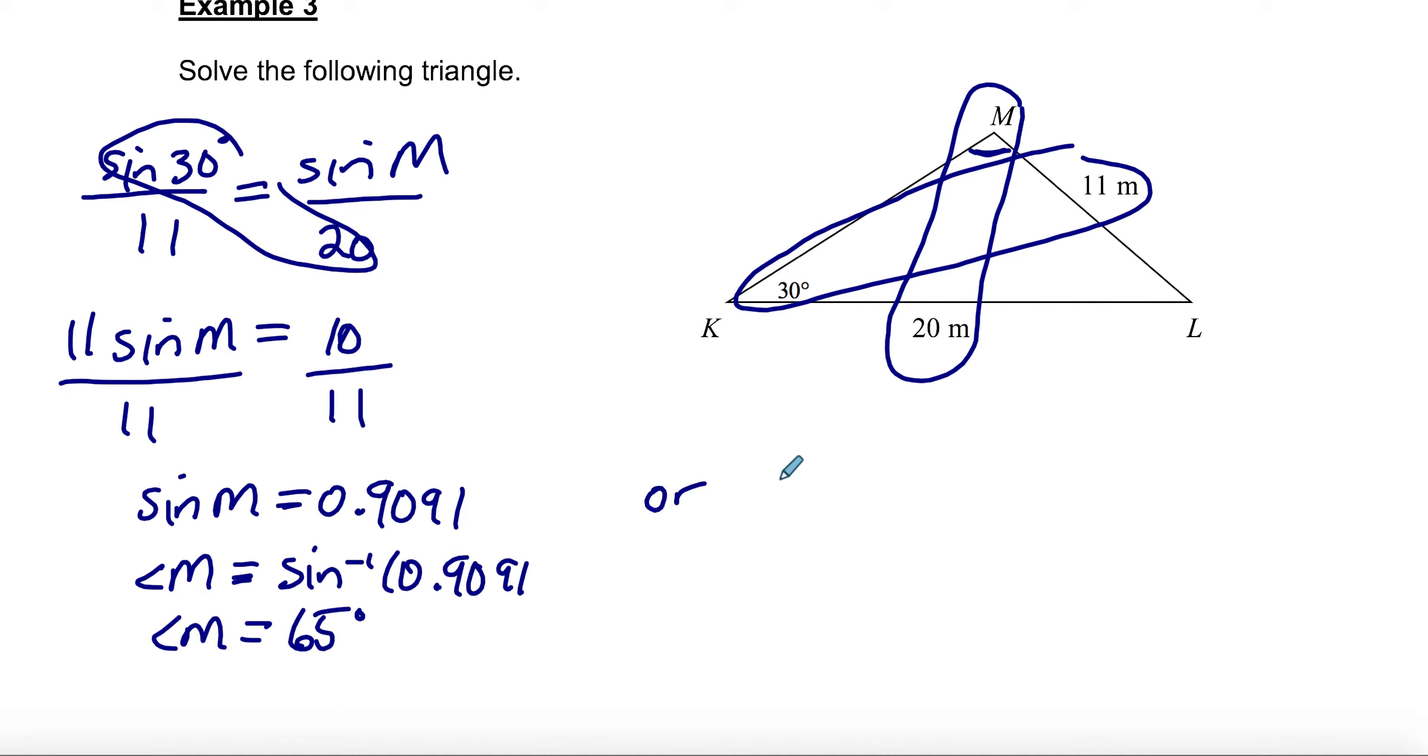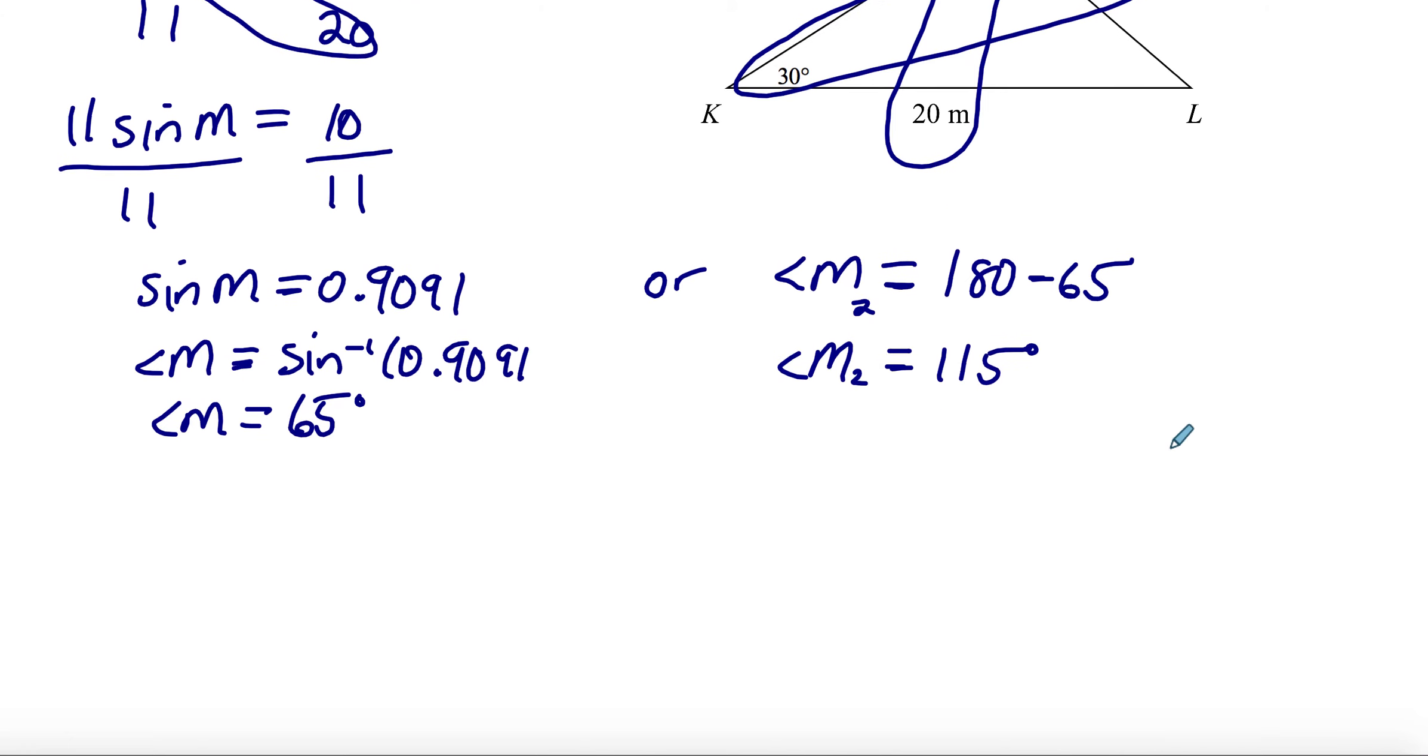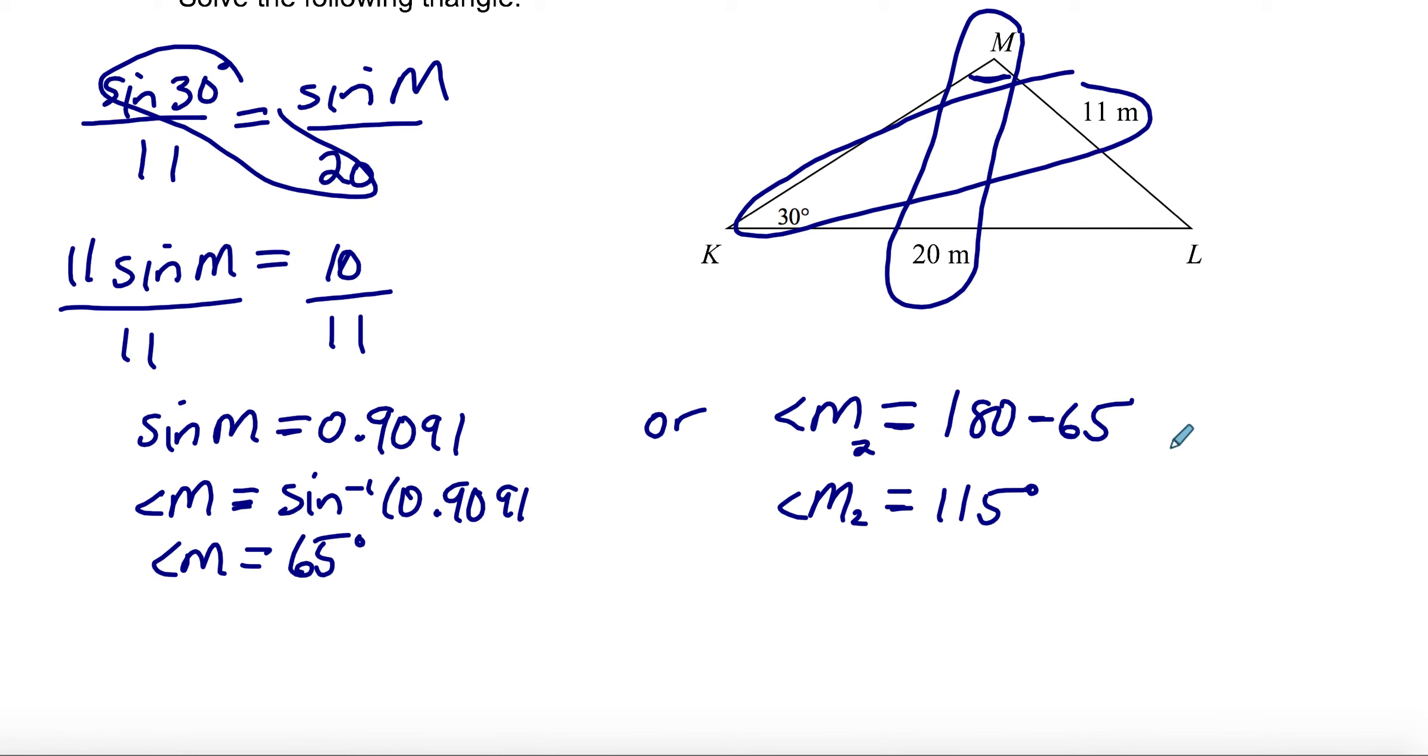If angle M is 65 degrees, we just want to check again: is there another possible angle? Angle M2, second possibility, could equal 180 minus 65, which is 115 degrees. This time if M was 115 and K was 30, that would still be okay. We would still be able to solve for angle L. In this case, we might have two possibilities here for angle M. We're going to actually have to figure out the rest of the values of the triangle using either 65 for angle M or 115.